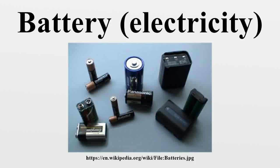An electric battery is a device consisting of two or more electrochemical cells that convert stored chemical energy into electrical energy. Each cell has a positive terminal, or cathode, and a negative terminal, or anode.